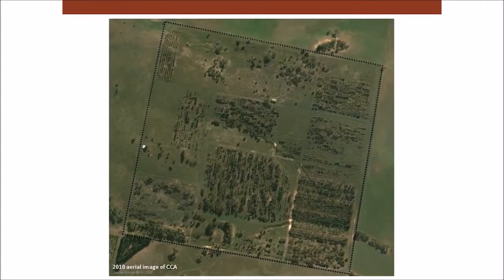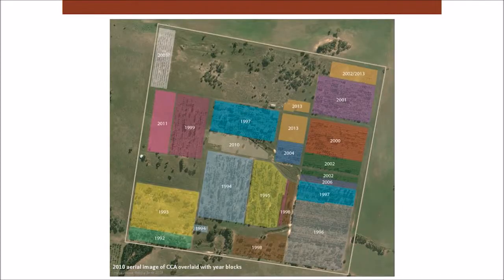This is an aerial photograph taken a few years ago. Each one of those four boundaries is about half a kilometre long, to give you an idea of the size of the property. Each block is a different year's worth of planting — there have been plants put in every year except for two or three years since 1993. You can see it's almost full of trees except for a few sections where there's some remnant vegetation.